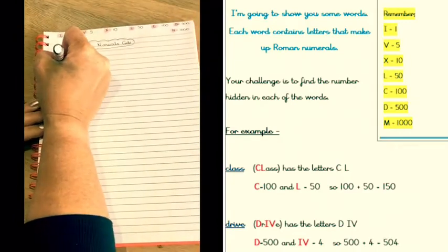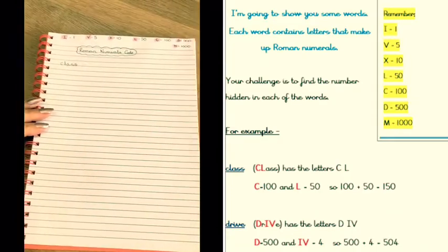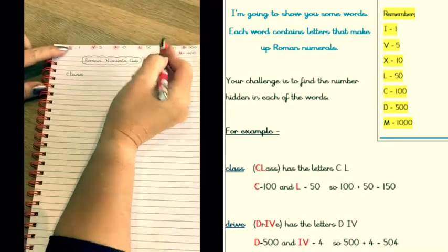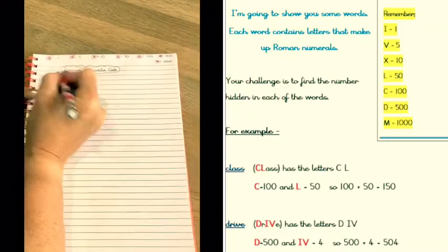For example, if we wrote the word 'class,' I can see that C is one of my Roman numerals and L is one of my Roman numerals.